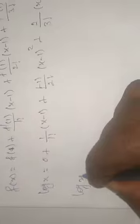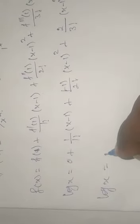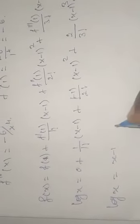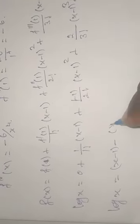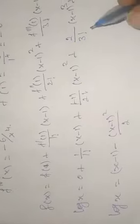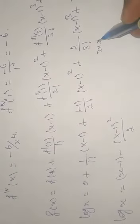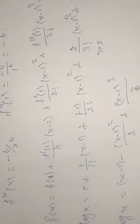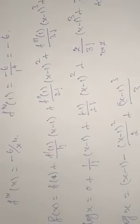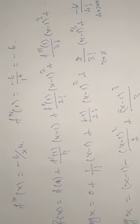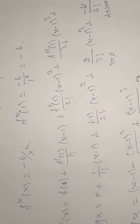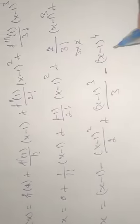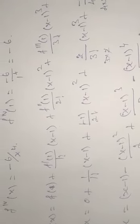Simplifying this, we get log x equal to (x minus 1) minus (x minus 1) squared by 2, then 3 factorial is 3 into 2 so the 2 cancels giving plus (x minus 1) cubed by 3, then 4 factorial is 4 into 3 into 2 and the 6 cancels giving minus (x minus 1) to the power 4 by 4, plus etc.